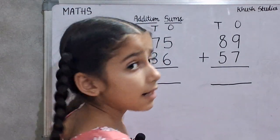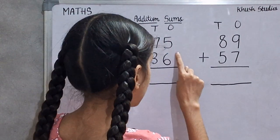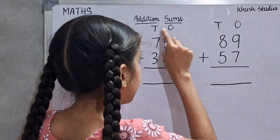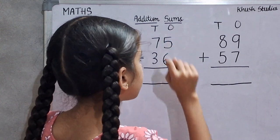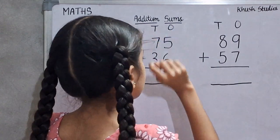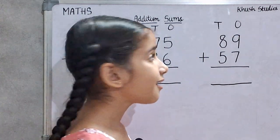Now, we will add 75 plus 36. 7 tens 5 ones. 75. 3 tens 6 ones. 36.